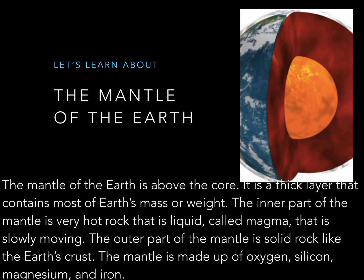The mantle of the earth is above the core. It is a thick layer that contains most of earth's mass or weight. The inner part of the mantle is very hot rock that is liquid called magma, that is slowly moving. The outer part of the mantle is solid rock, like the earth's crust.